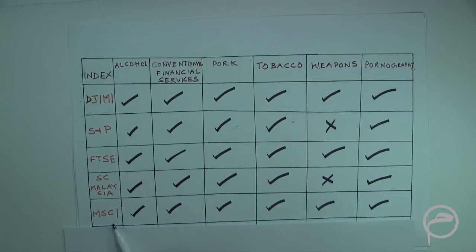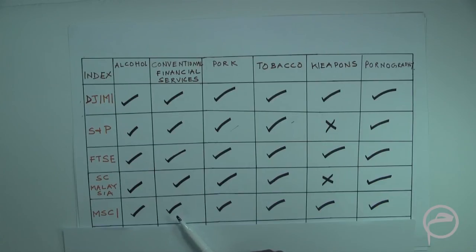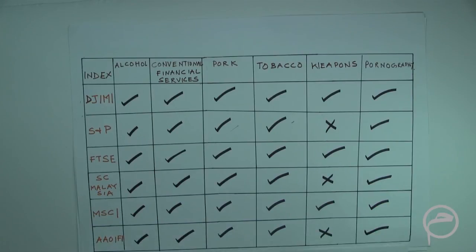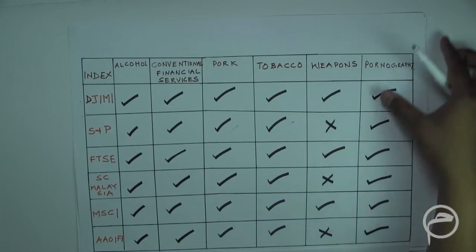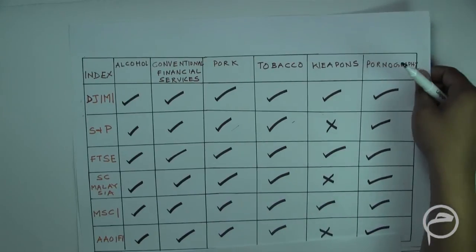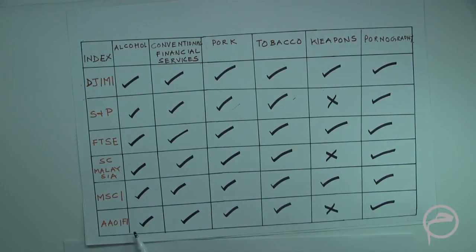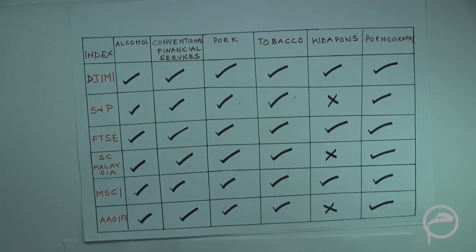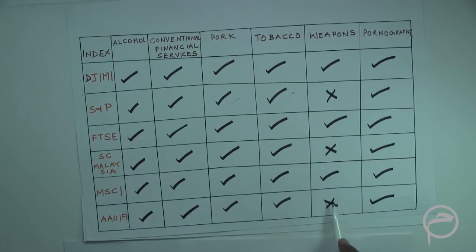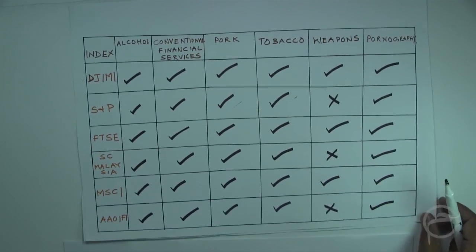For the MSCI index, alcohol, conventional financial services, pork, tobacco, weapons, and pornography are all used as screening parameters. For IOFEE, which is an important body, all industry parameters are quite common across the indices, except for the parameter in relation to weapons.